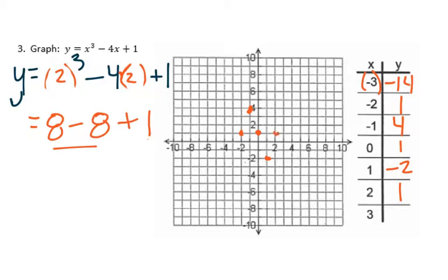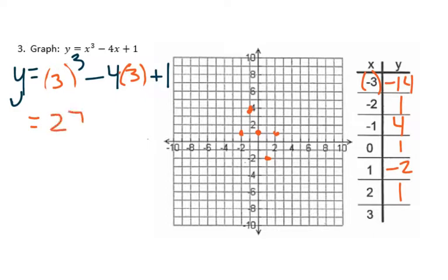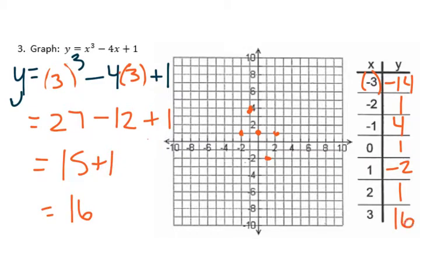Then plugging in 3: 3 cubed is 27, minus 12, plus 1. 27 minus 12 is 15, and 15 plus 1 is 16 — a number we can't quite plot, but it would be up here. Looking at what we graphed, you might think: what in the world did I just graph? However, it is a cubic, and so it ends up having this snake-like shape. It's like connect-the-dots from left to right, but you do want to smooth it out. And there it is — a cubic function.